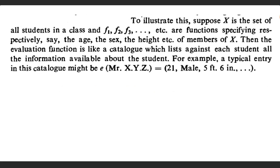To illustrate this, suppose that x is the set of all students in a class and f1, f2, f3 etc. are functions specifying respectively the age, the sex, the height, etc. That is, f1(x) gives the age of the person x, f2(x) gives the sex and f3(x) gives the height of x and so on. Then the evaluation function lists against each student the information available about the student. For example, a typical entry will be of the form e(Mr. X, Y, Z) equal to information about the person.